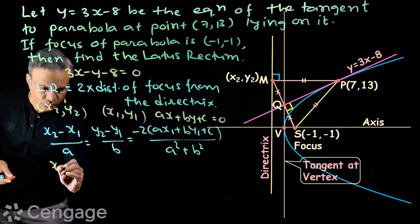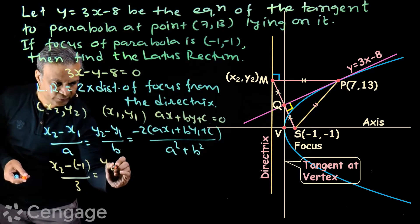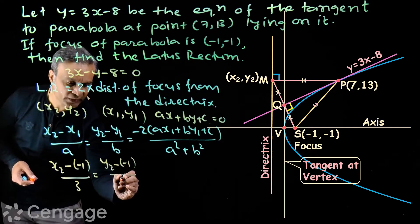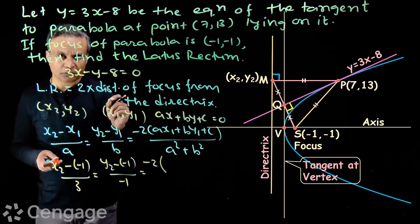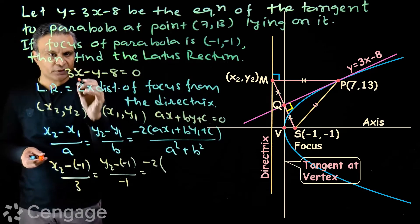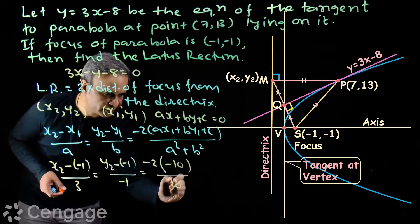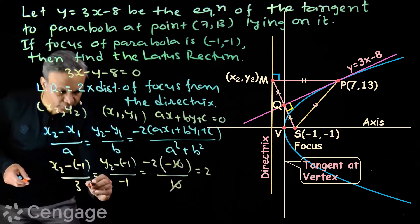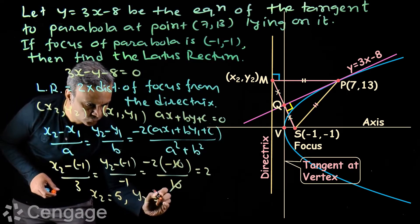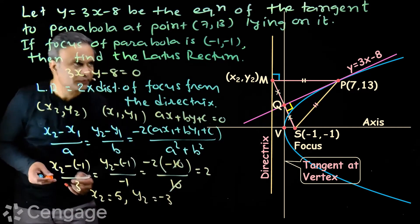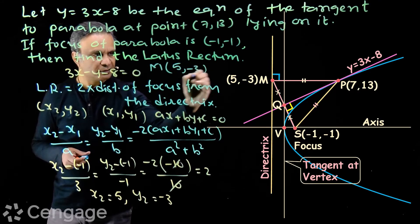Suppose coordinates of point M are (x₂, y₂). Then (x₂ + 1)/3 = (y₂ + 1)/(-1) = -2(3(-1) + (-1)(-1) - 8)/(9 + 1), which gives (-3 + 1 - 8)/10 = -10/10 = -2. From this comparison we get x₂ = 3(2) - 1 = 5, and y₂ = -2(-1) - 1 = -3. So the coordinates of point M are (5, -3).